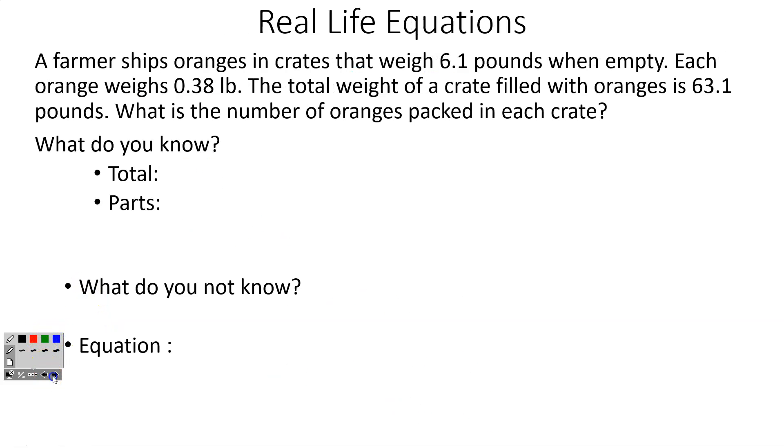How about this one? A farmer ships oranges in crates that weigh 6.1 pounds when empty. Each orange weighs 0.38 pounds. The total weight of the crate filled with oranges is 63.1 pounds. What's the number of oranges packed in each crate? Well, we know our total weight and that's going to be the 63.1. So what parts do we know? Well, we know that a crate when it's empty, so the crate is 6.1 pounds. We know each orange is 0.38. So what do we not know? We don't know the number of oranges. So I'm going to use X as a variable for that one.